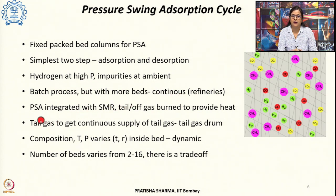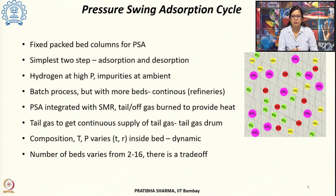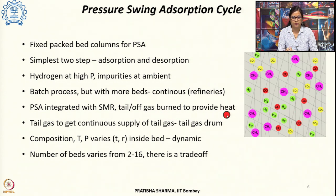When integrated with an SMR unit for hydrogen purification, after removal of hydrogen, the tail gas or off gas obtained from the PSA unit can be used to provide the required energy for steam methane reforming. This tail gas is burnt in burners to provide the required heat of reaction to the reformer tubes, improving the energy efficiency of the process.